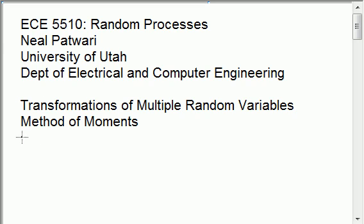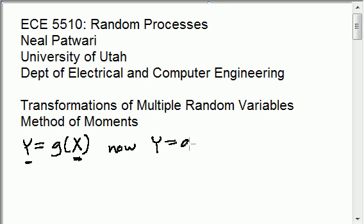When we talked about the method of moments in previous lectures, we had the case that we had a new random variable that was a function of another random variable. And given the distribution of X, we would try to find the distribution of Y. Now, we're going to try to find the distribution of Y when it's a function of multiple random variables. So for example, we might have a function of two random variables X1 and X2.